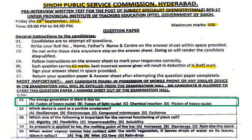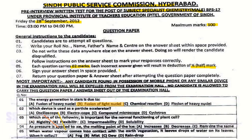Question number 1: The energy generation in stars. The correct answer is D — fusion of light nuclei.